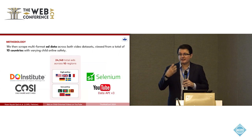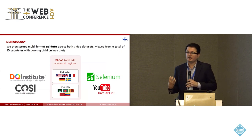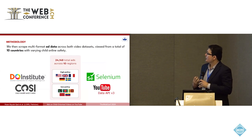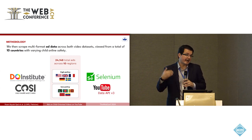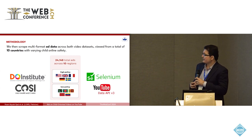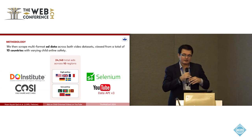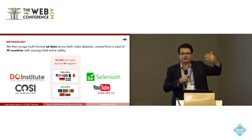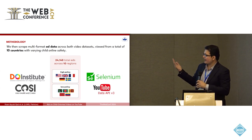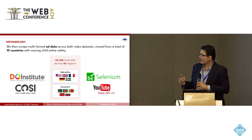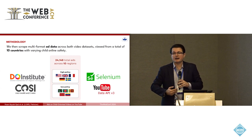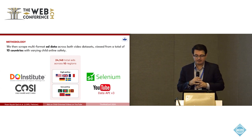Once we had both labeled and unlabeled child-oriented videos, we scraped multi-format ad data across both datasets, viewed from 10 countries with varying online child safety levels. We selected these 10 countries using the DQ Institute's Child Online Safety Index. The high-policy five countries were the US, France, Germany, Sweden, and the UK; the low-policy countries were Pakistan, Bangladesh, Sri Lanka, Morocco, and Venezuela. In each country, we used VPNs to collect ad data.